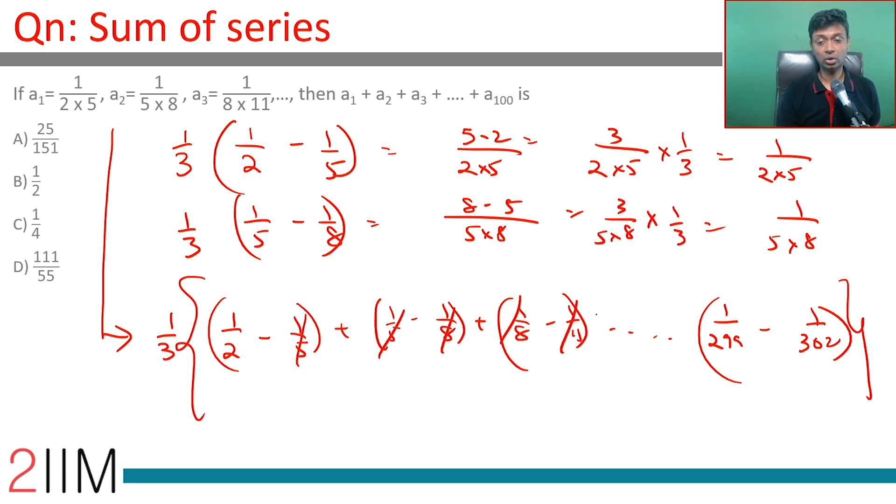A bunch of things get cancelled. This will get knocked off, this will get knocked off, this will get knocked off. Everything will get knocked off. What we are looking at is 1 by 3 times 1 by 2 minus 1 by 302.